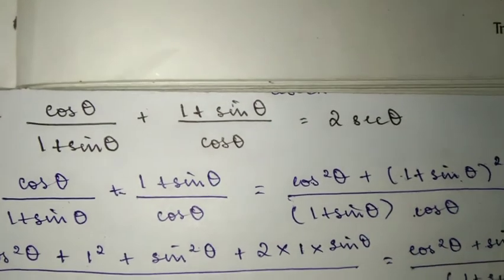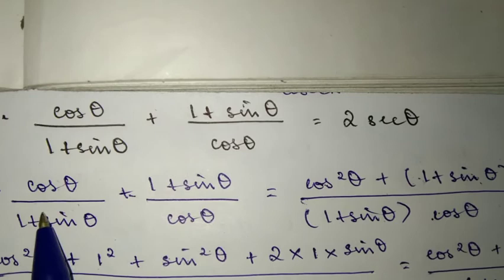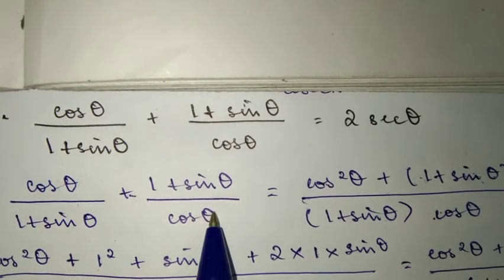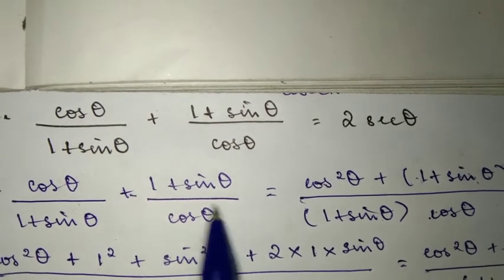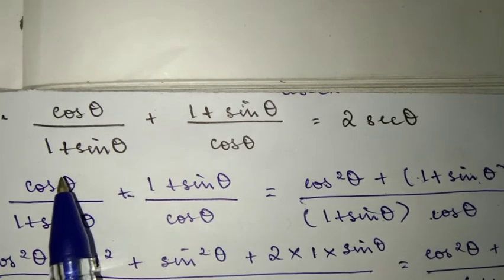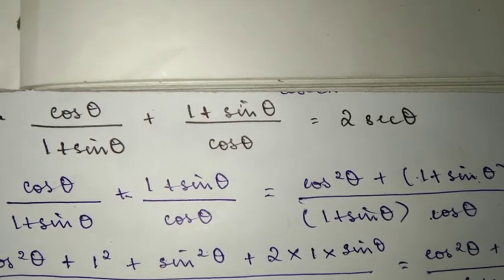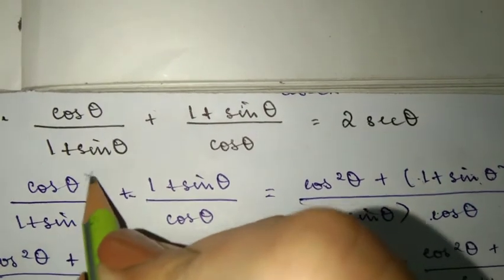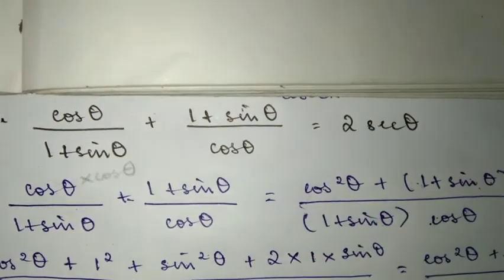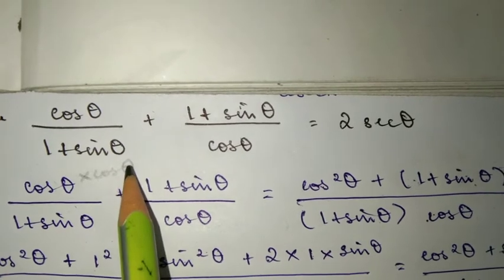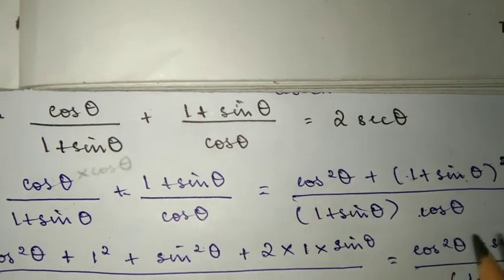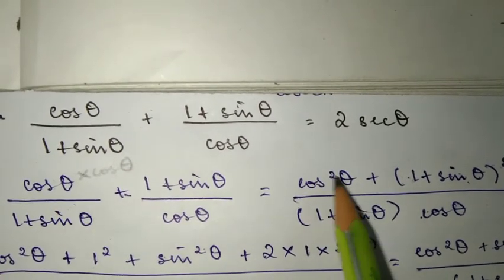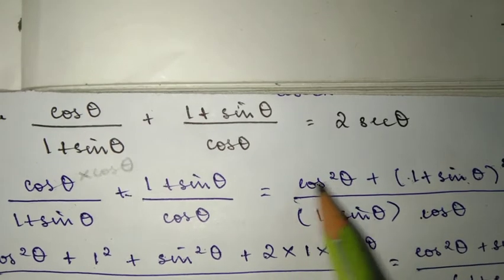For the denominator, we have 1 plus sin theta and cos theta, so we multiply them together. In the numerator, cos theta multiplied by cos theta gives us cos squared theta. So we get cos squared theta.